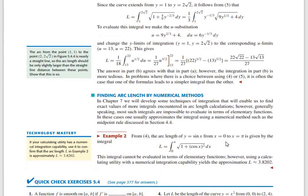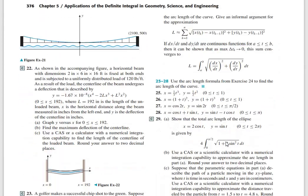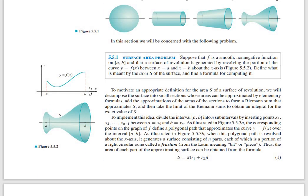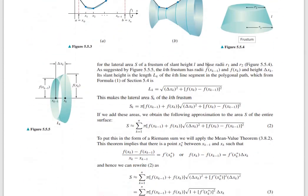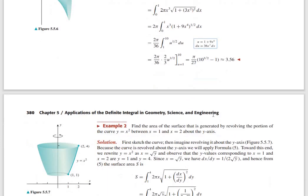That is also expressible as a parametric formula. Now let's look at the area of surface of revolution. A surface of revolution is a surface generated by revolving a plane curve about an axis in the same plane. The surface area formula involves integrating 2π f(x) times the square root of 1 plus [f'(x)]² dx from a to b.